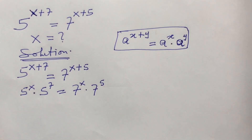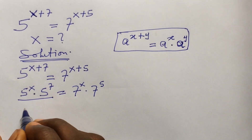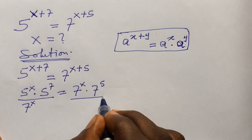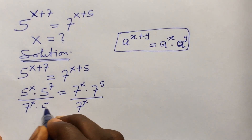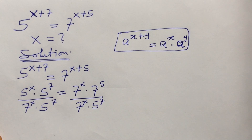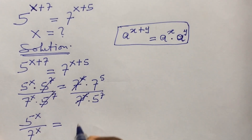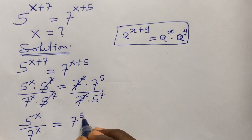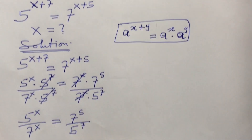That is the law I just applied. Now we proceed. On the left-hand side I divide by 7 to the power of x, and I also divide the right side by 7 to the power of x. Then on the left-hand side I divide by 5 to the power of 7, and do the same on the right side. After cancellation, we are left with 5 to the power of x over 7 to the power of x, equal to 7 to the power of 5 over 5 to the power of 7.